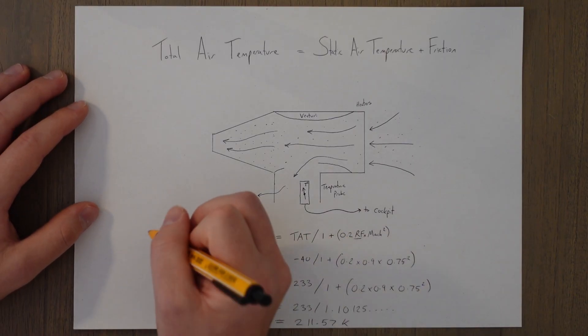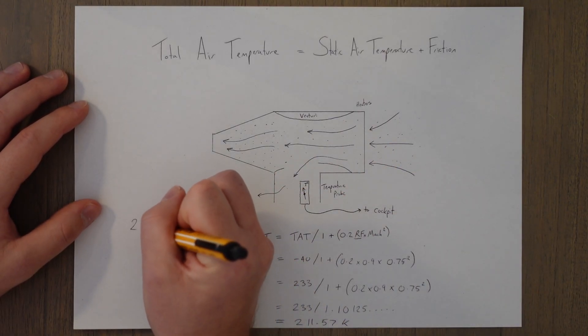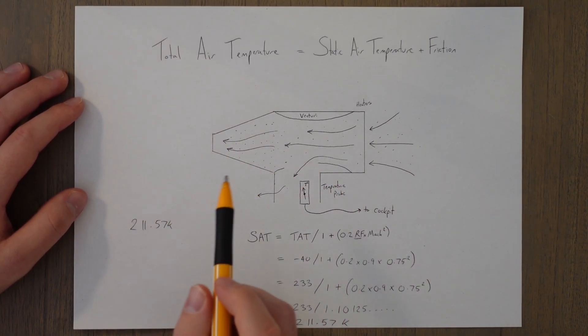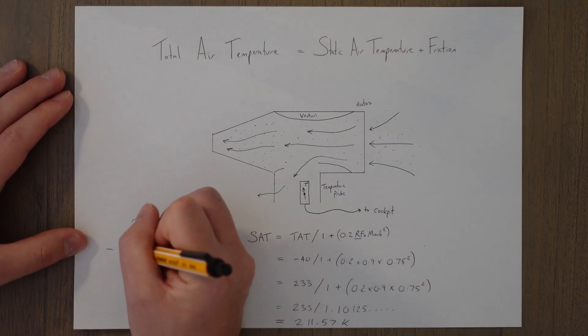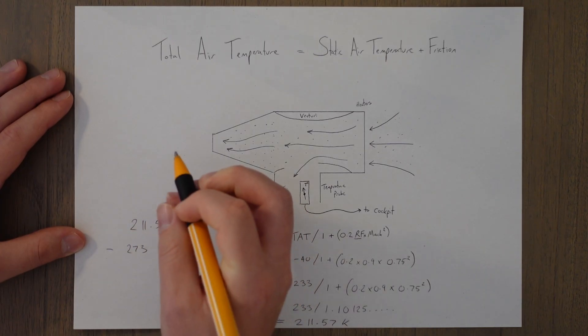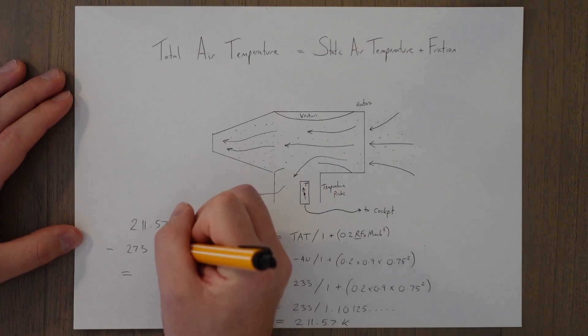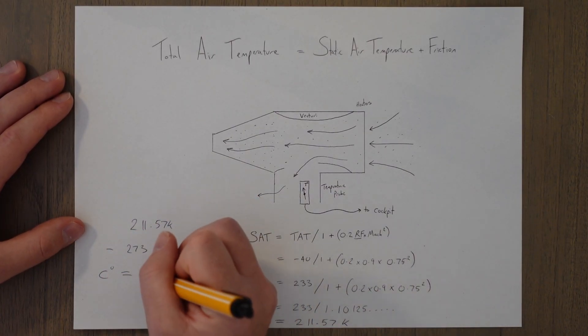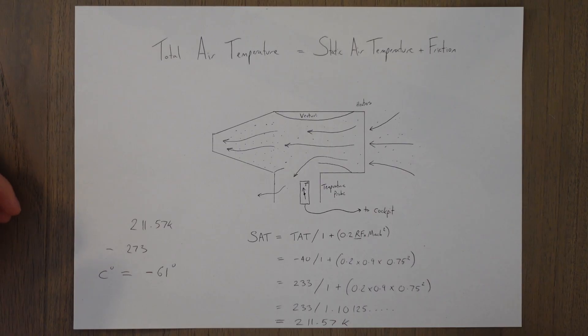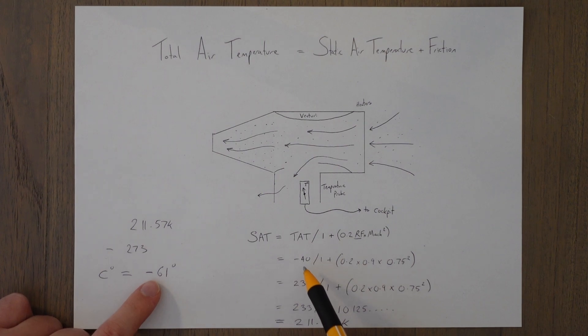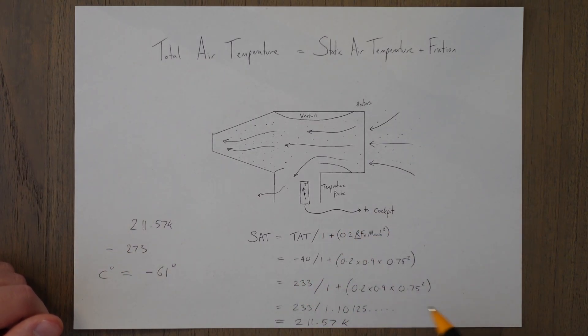And if we wanted to convert that, so let's just do it back over here. So we've got 211.57 Kelvin. We want to convert that back into Celsius. So we take away 273 and we get an answer. So that's, yeah, Celsius is here. That's going to give us minus 61. So we can see that the friction of us traveling through the air, we're going from minus 61 actual outside air temperature, and we're adding about 20 degrees of friction to get us up to the total air temperature of minus 40. So it has a big effect whilst we're traveling at relatively high Mach numbers.